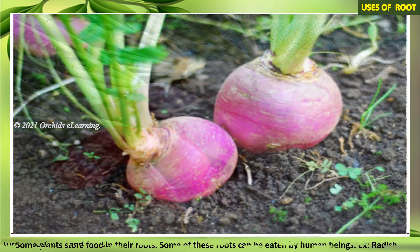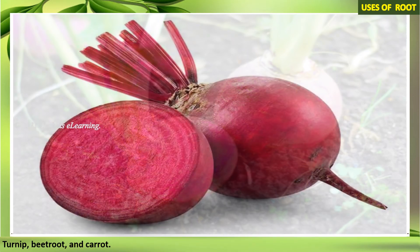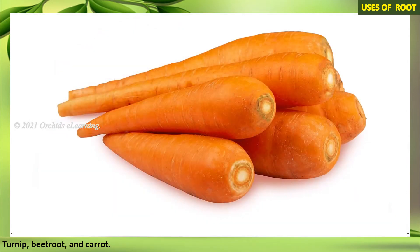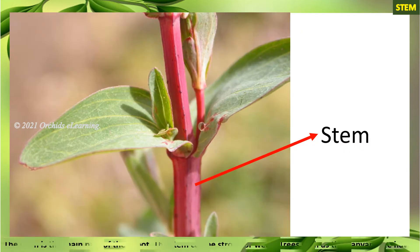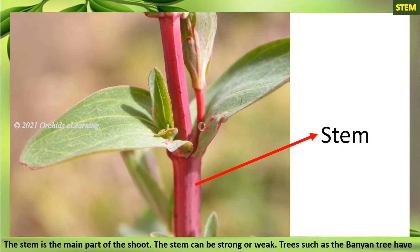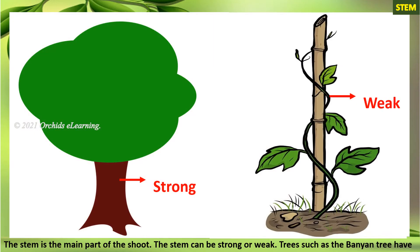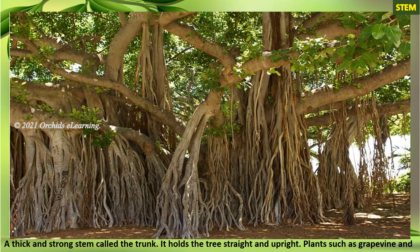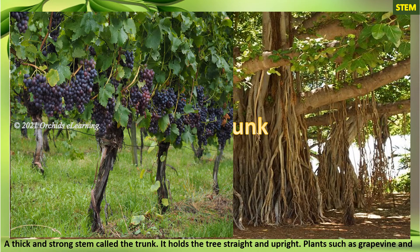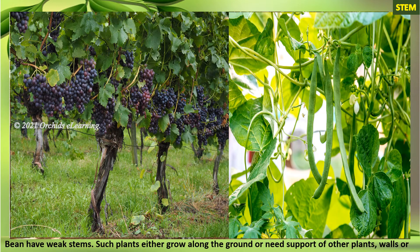Some plants store food in their roots, and some of these roots can be eaten by human beings — examples are radish, turnip, beetroot, and carrot. Stem: the stem is the main part of the shoot. The stem can be strong or weak. Trees such as the banyan tree have a thick and strong stem called the trunk, which holds the tree straight and upright.